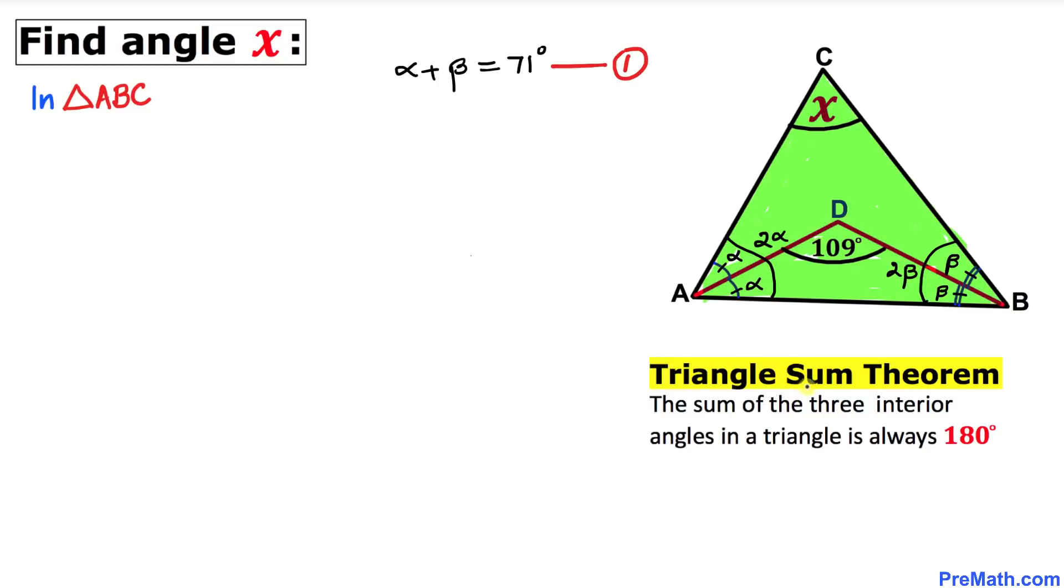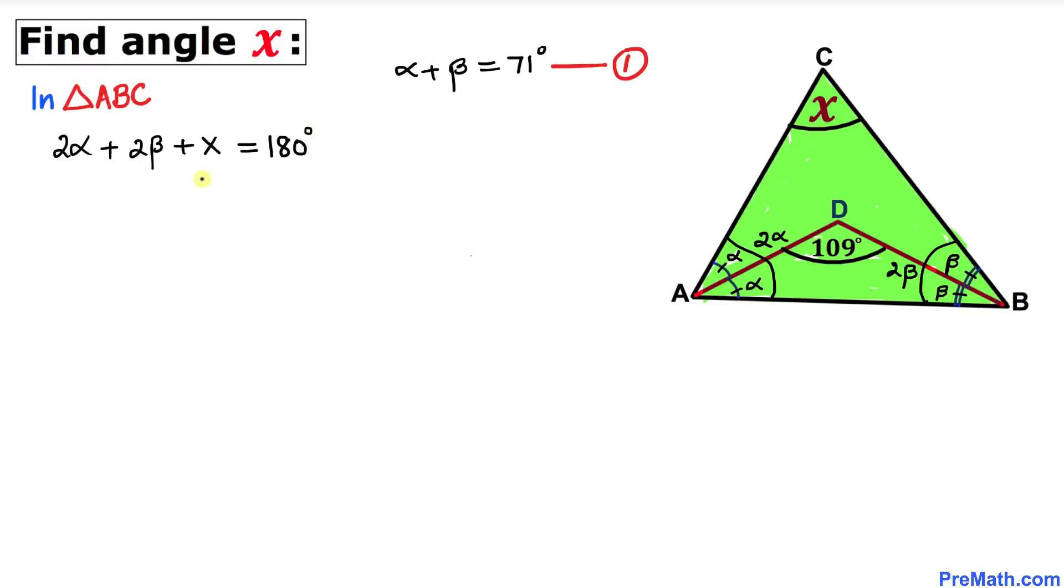Once again, let's recall the Triangle Sum Theorem. The sum of all three angles must be 180 degrees. Therefore, I can write 2 alpha plus 2 beta plus angle X equals 180 degrees. Let me factor out 2, so I can write 2 times (alpha plus beta) plus X equals 180 degrees.